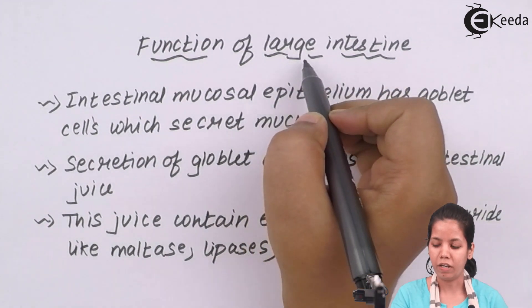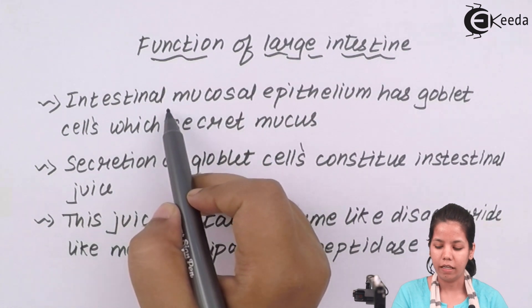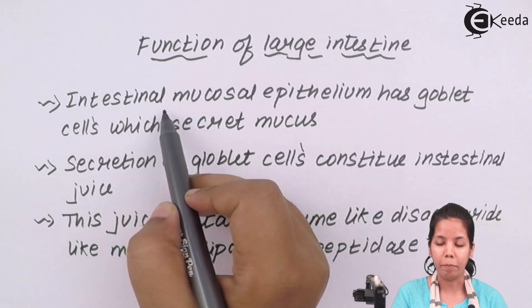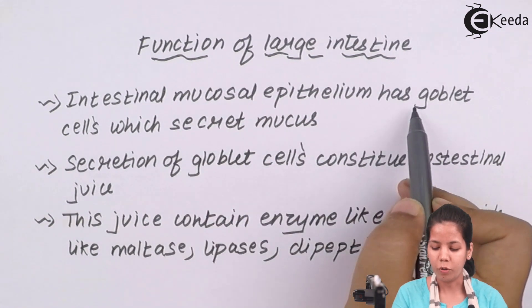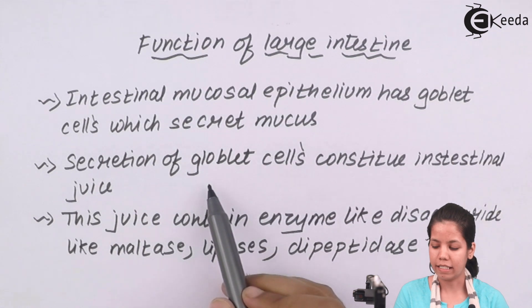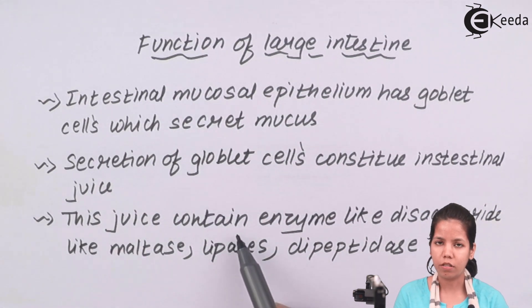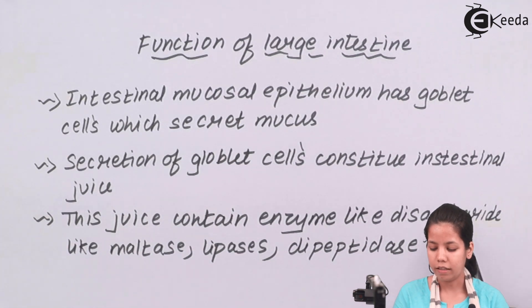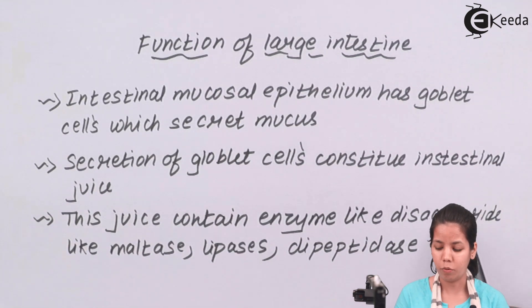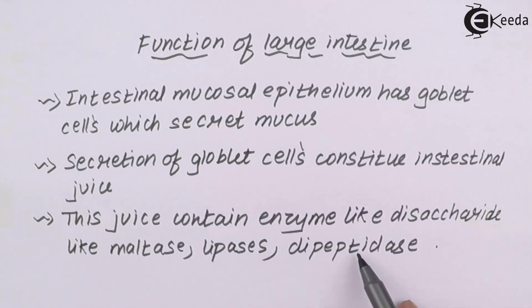Regarding the function of the large intestine: the intestinal mucosa basically has goblet cells, and these goblet cells secrete mucus. The secretions of goblet cells constitute the intestinal juices — these include disaccharidases which help to break down maltose sugar, lipases which help to break down lipids, and dipeptidases which help to break down peptides or proteins.